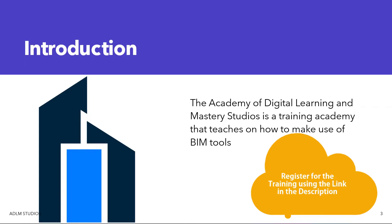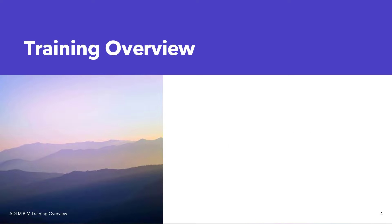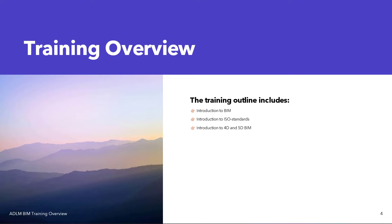Throughout this training we'll be looking into: an introduction to BIM, which will be taught during the live training; then an introduction to ISO standards — specifically the ISO 19650 standard — covering the rules, abbreviations, codes, and all that will be explained during the course of the training. Then you'll be learning about 4D and 5D BIM.